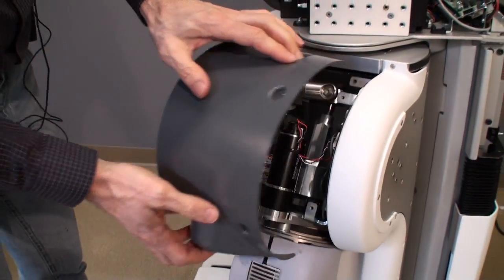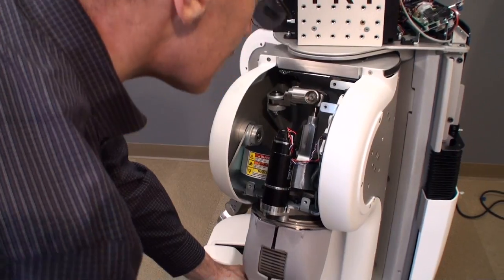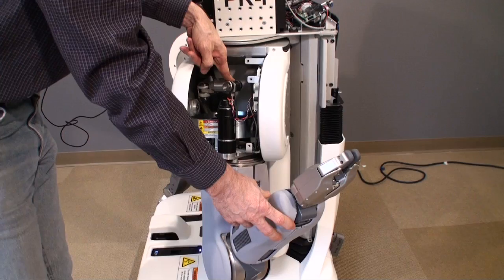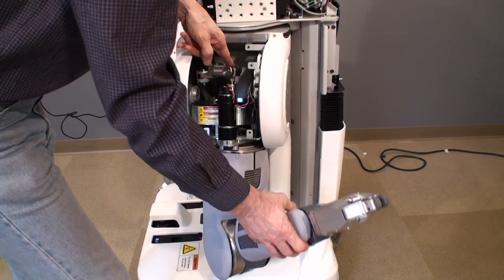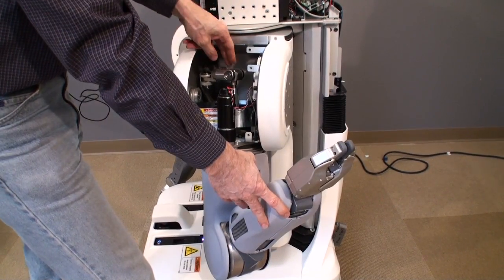PR2's arms are compliant and counterbalanced. While this mechanism allows for operation in the presence of humans and in unstructured environments, it also poses a challenge for many control algorithms.